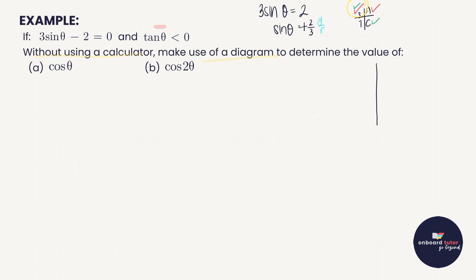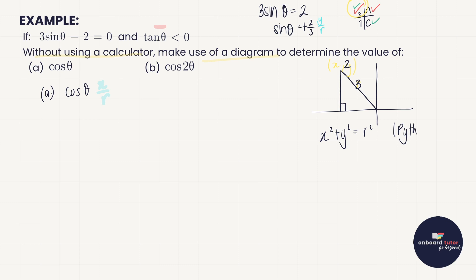We're going to draw a triangle in quadrant 2 — it doesn't have to be very big; this just helps us work out the missing value. To find cos θ, which is x over r, I currently have a y value and an r value, so I need to find x. We draw the terminal arm, joining down to the x-axis, and substitute in what we know: y equals 2 and r equals 3, based on isolating that sine ratio.